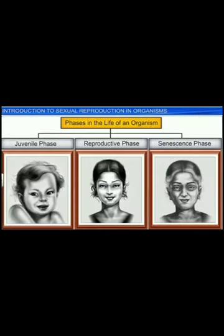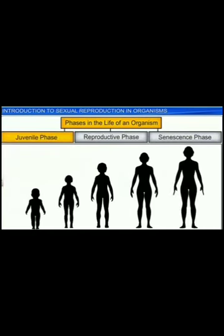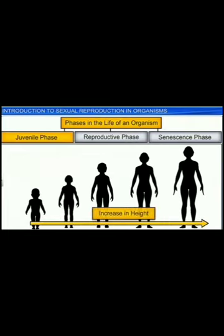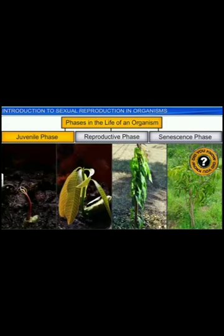All organisms, for instance, go through three phases of life: the juvenile phase, reproductive phase, and senescence phase. The juvenile phase is a period of growth characterized by an increase in height in all animals, including human beings. Whereas in plants, we see the emergence of new leaves during the juvenile phase. Did you know that in plants, the juvenile phase is known as the vegetative phase?